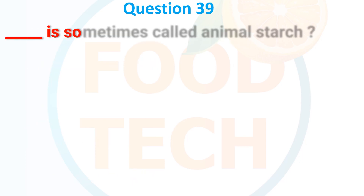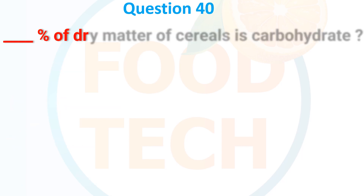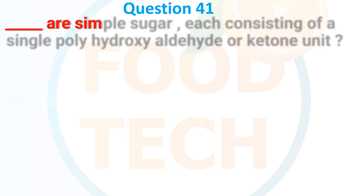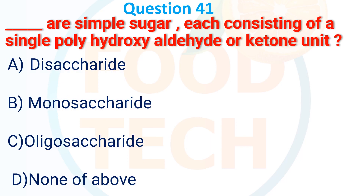Question 35: Raffinose is an example of — A. Monosaccharide, B. Disaccharide, C. Trisaccharide, D. Tetrasaccharide. The answer is C. Trisaccharide. Question 36: Which is sometimes called animal starch? A. Amylose, B. Amylopectin, C. Glycogen, D. Saponin. The answer is C. Glycogen. Question 37: These are simple sugars, each consisting of a single polyhydroxy aldehyde or ketone unit — A. Disaccharide, B. Monosaccharide, C. Oligosaccharide, D. None of the above. The answer is B. Monosaccharide.